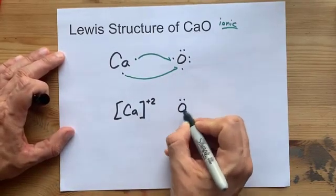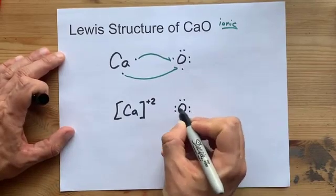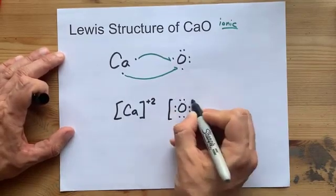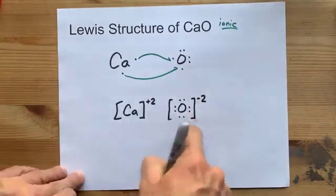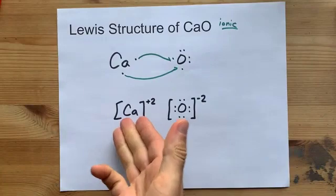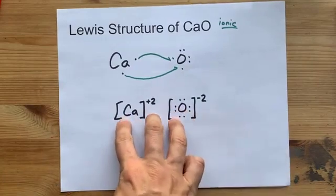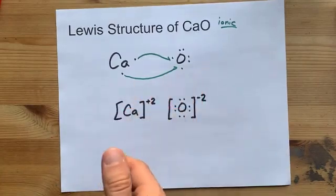The oxygen now has eight electrons around it, so draw them all in, and that's two more than it started with. So you've got to put square brackets with the minus two charge. That's all there is here. This is the complete Lewis structure for calcium oxide.